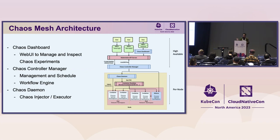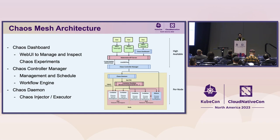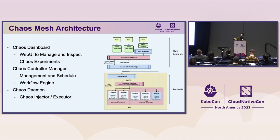Looking at the Chaos Mesh architecture, there are three main components. First is the Chaos Dashboard — a web UI to manage, create, run, and monitor chaos experiments. Second is the Chaos Controller Manager — the brain of the architecture — responsible for managing and scheduling chaos experiments. When you define a chaos experiment, the request goes to the controller manager, which detects and handles the state based on your definition. It is also embedded within a workflow engine where you can define and execute complex chaos scenarios, orchestrating multiple chaos experiments for complex, real-life production scenarios.